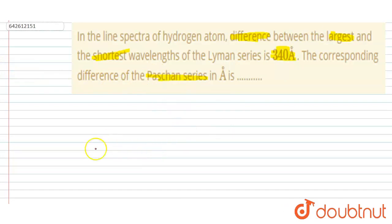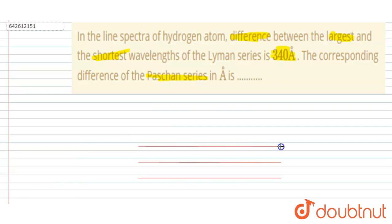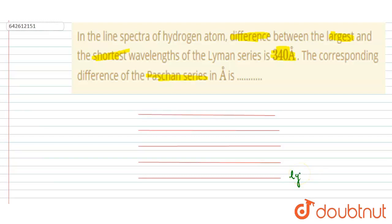Let us draw the lines first. This is the Lyman series, this is the Balmer series, and this is the Paschen series and so on. Any electron whose final n equals 1 falls in the Lyman series, and you have to find out the difference between lambda max and lambda minimum for the Paschen series.